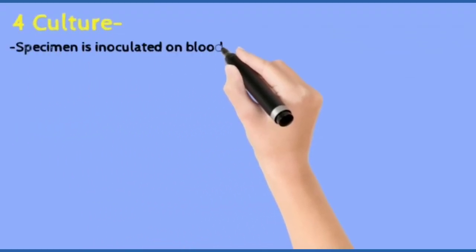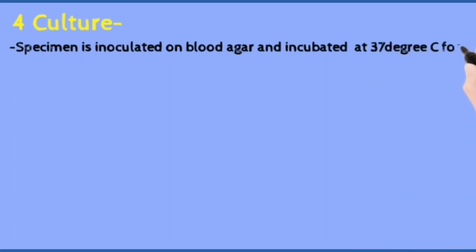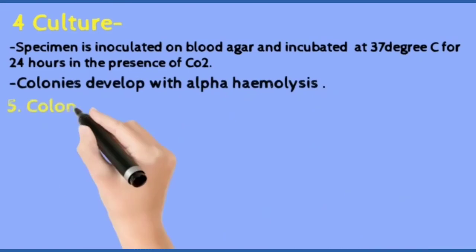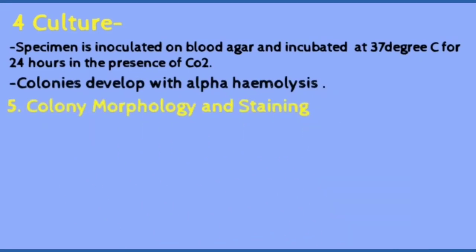For culture, specimen is inoculated on blood agar and incubated at 37 degrees Celsius in presence of CO2. Colonies develop with alpha hemolysis.